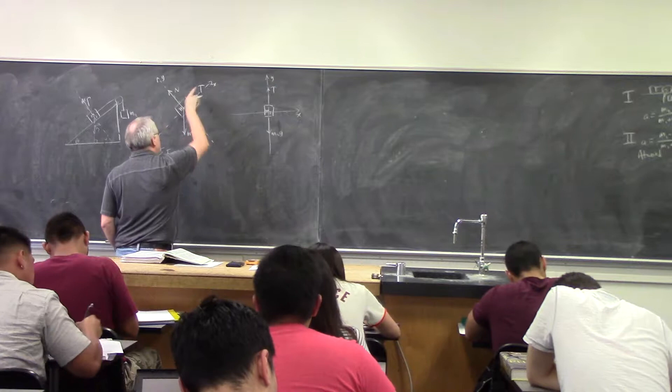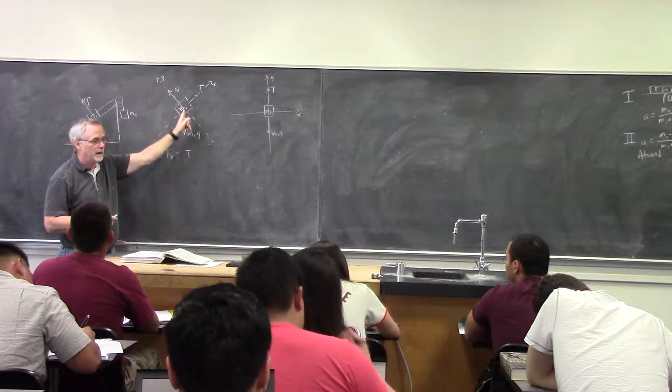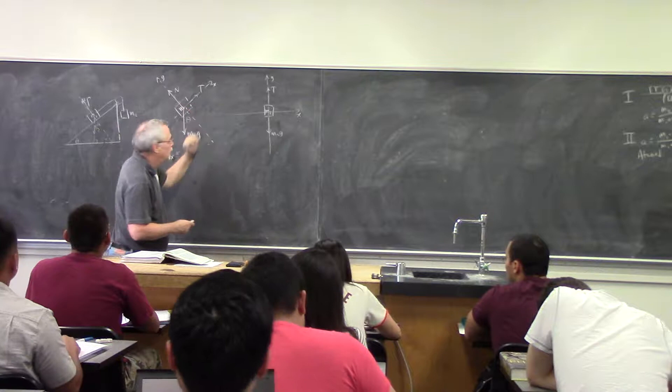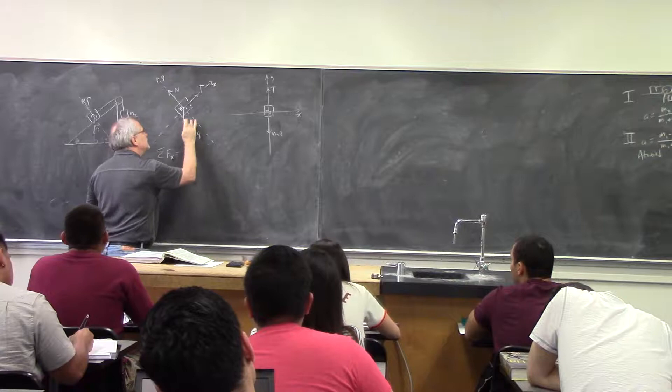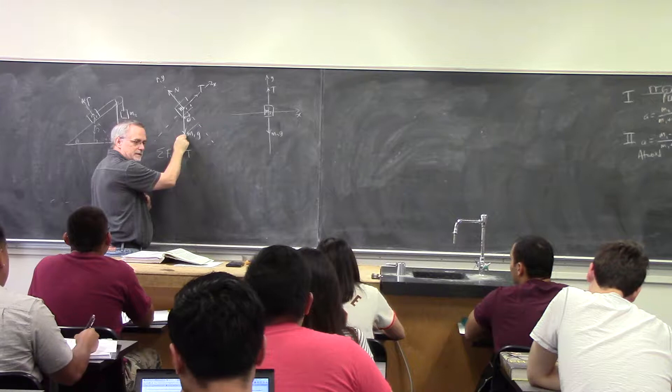There's no x-component for the normal force at all — it's right on the y-axis. But does the weight have an x-component? It's at an angle, so if I make this my hypotenuse and this is my theta, this is the opposite side, and it's also in the x-direction.